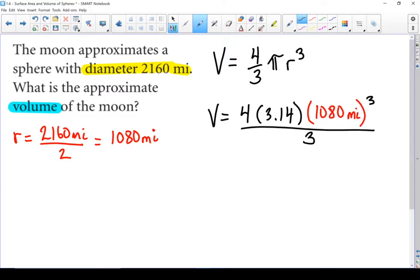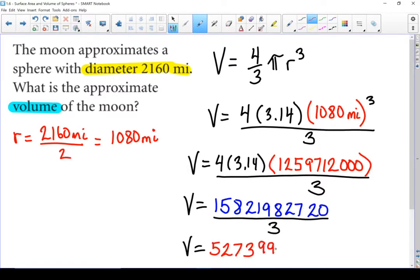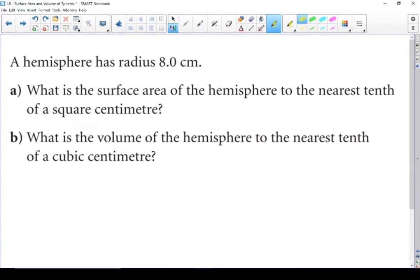I changed that 4 thirds to multiplying by 4 and dividing by 3. It's easier to work out that way. Let's start doing our calculations. The volume of the moon is approximately 5,273,994,240 cubic miles. That's a big number. Next question.